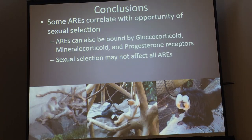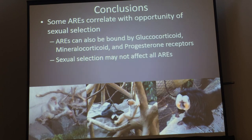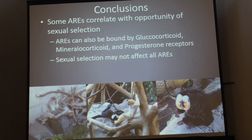In conclusion, some androgen response elements correlate with the opportunity for sexual selection, but not all of them do. A possible explanation is that androgen response elements can be bound by many different types of receptors, including glucocorticoids, mineralocorticoids, and progestins — they're all competing. Because the base pairs can alter specificity and affinity, something might be androgen regulated but could be more strongly glucocorticoid regulated, so the pattern wouldn't show up as clearly. Also, sexual selection may not affect all androgen response elements — things like sperm production or penis growth are needed by all males and must be androgen regulated, so you may not see that same pattern there.